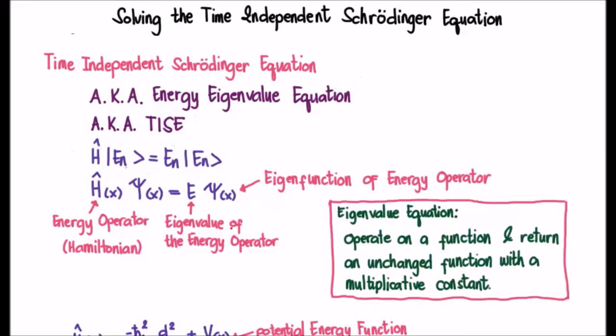Now they both represent the same system. So the Hamiltonian could operate or act on the ket, or it could act on the wave function and calculate the energy of the system. And it's going to be E_n or E as the energy of the system.